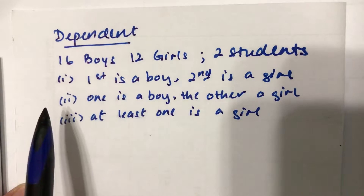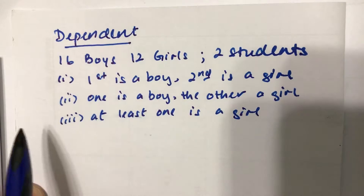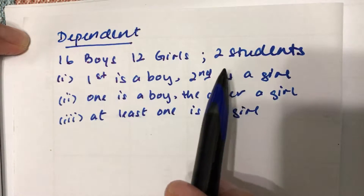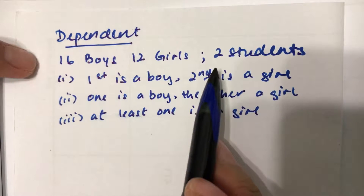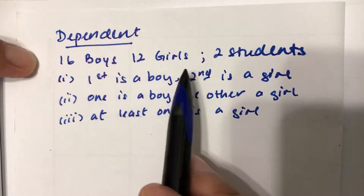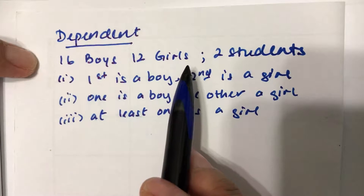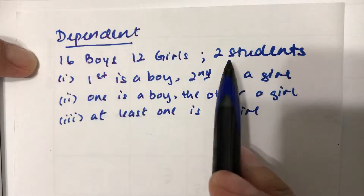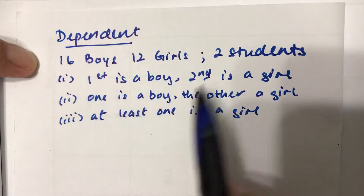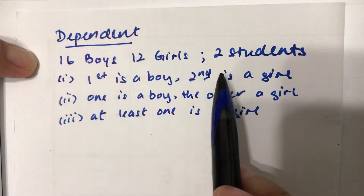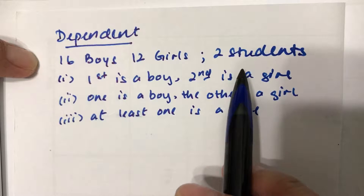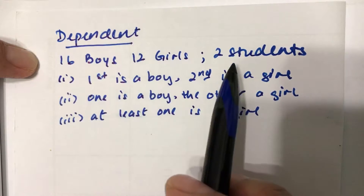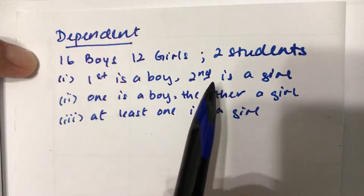We're going to look at a dependent case of probability. We have 16 boys and 12 girls and we're going to pick two students. Even though the question doesn't explicitly say this is a dependent case — like 'without replacement' — when we pick two students we cannot replace the first student back, otherwise we may pick the same person again and end up with only one person. So whenever we pick two students like this, it is known as a dependent case.